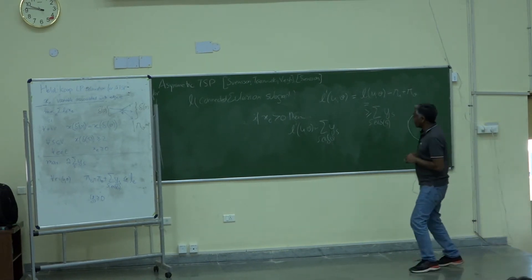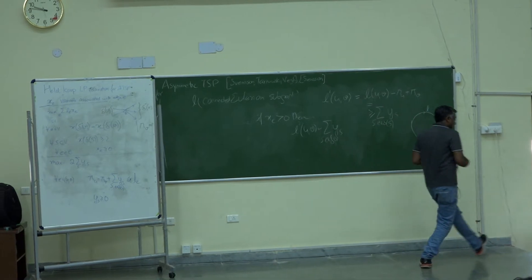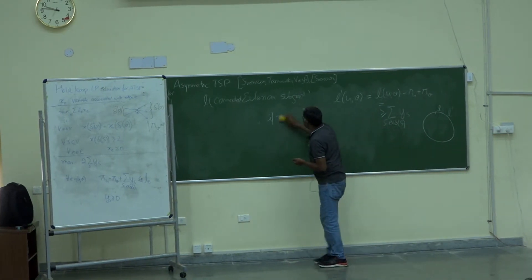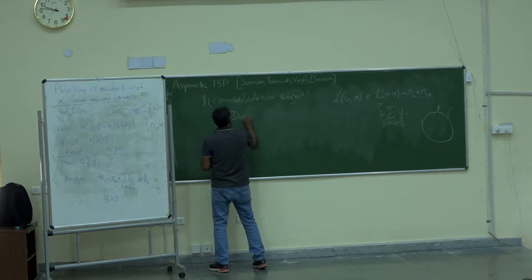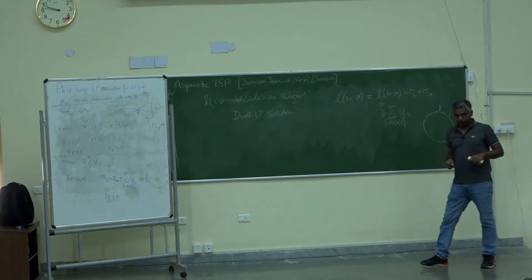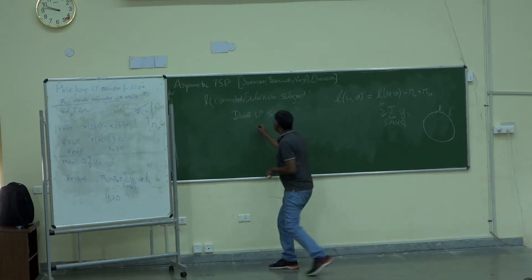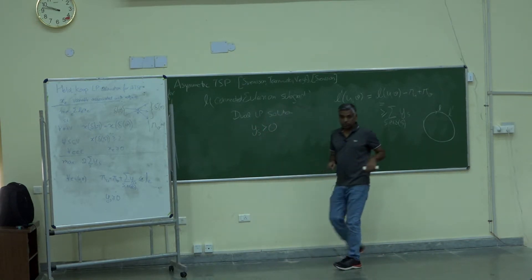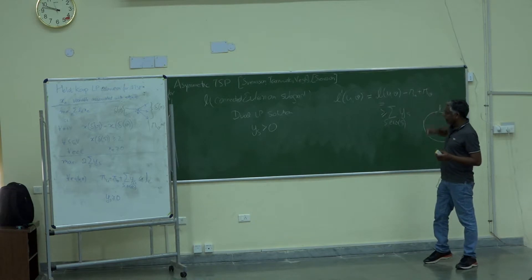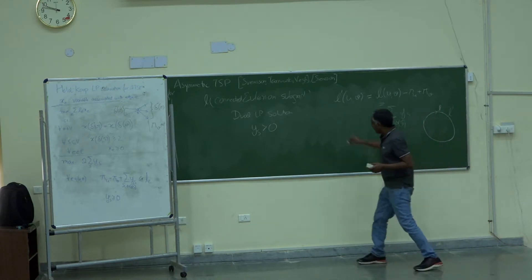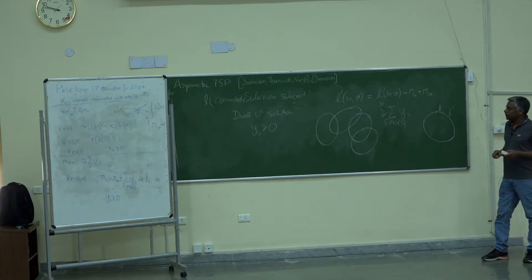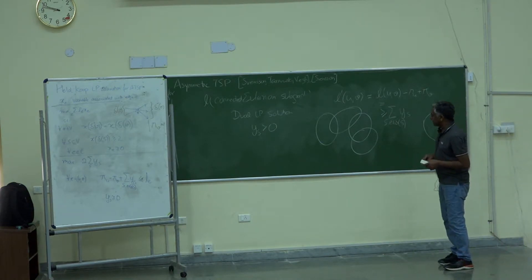That's the first point. The second point: if you look at the optimal dual LP solution, it has a nice structure. We've already gotten rid of the potential variables pi by redefining the length function. Now look at the sets S whose dual variable y_S is greater than 0 — these are the tight sets. The collection of such sets could in principle be arbitrary.